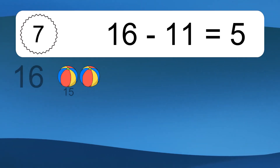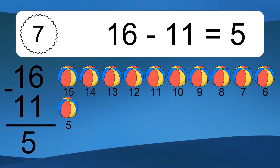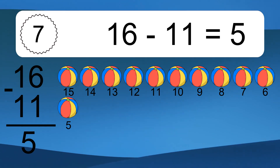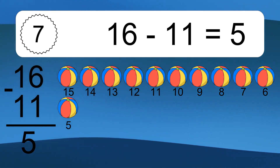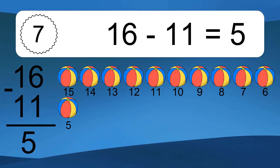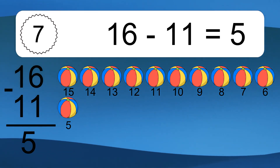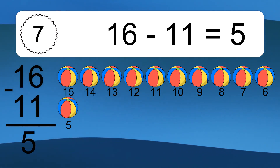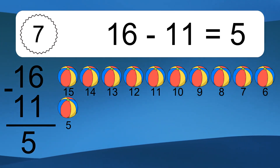16 minus 11 equals what? 16 minus 11 equals 5. Let's count it: 15, 14, 13, 12, 11, 10, 9, 8, 7, 6, 5.